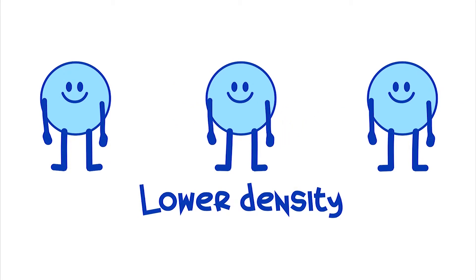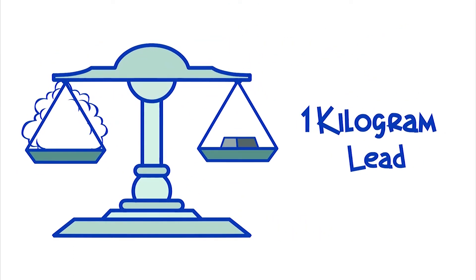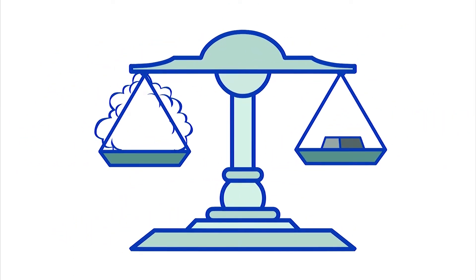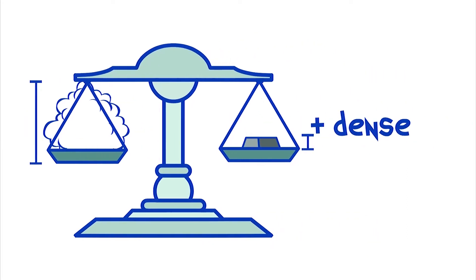Let's see an example. If we take one kilogram of cotton and one kilogram of lead, you realize that we need a lot more cotton to get one kilogram than lead. This is because the lead molecules are much closer to each other.